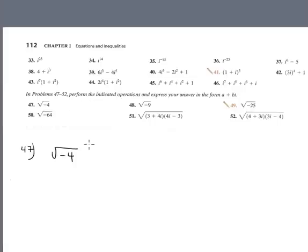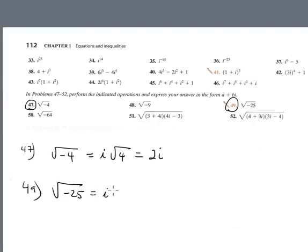Square root negative 4 is i. Square root positive 4 is 2. The answer is 2i. That was 47. Problem 49, it's similar. It's square root negative 25. It's i times square root positive number. Square root 25 is 5. 5i is the answer.